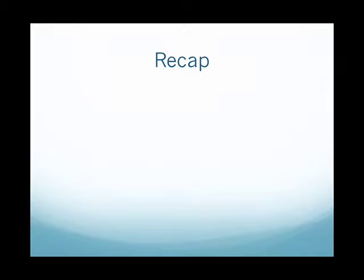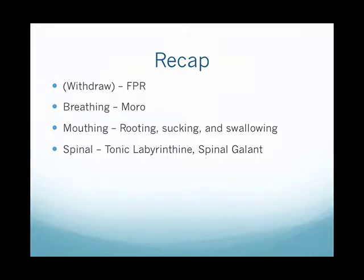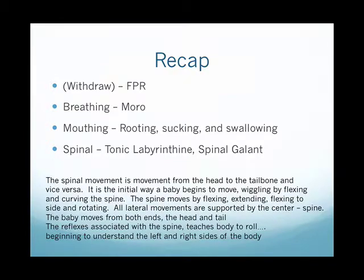Just to recap: we first started talking about the withdraw fear paralysis reflex that occurs in utero — the very first reflex. Then we went into the Moro reflex, which dampens the fear paralysis reflex. This is our fight-or-flight response; it develops in the womb but is present after birth. Then we covered the mouthing reflexes — rooting, sucking, and swallowing — the baby's first attempt at reaching. Then we started the spinal movement pattern with the tonic labyrinthine reflex, and today we look at the spinal gallant reflex.